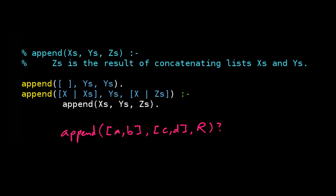We can do this query here. We'll say appending A, B with C, D is what? And Prolog will think a little bit and then reply success with R equals A, B, C, D.